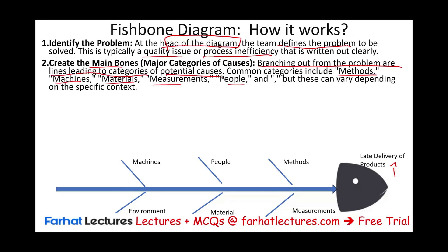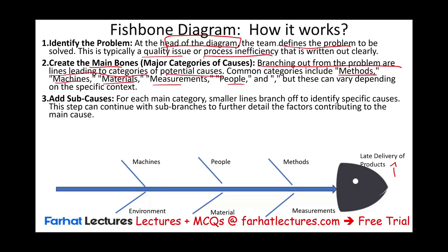You're not done yet. What you need to do now is add sub-causes. For each main category — people, machine, measurement, material — you need to identify sub-causes that branch off to identify specific causes. This step can continue with sub-branches to further present the factors contributing to the main problem.